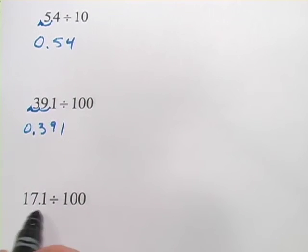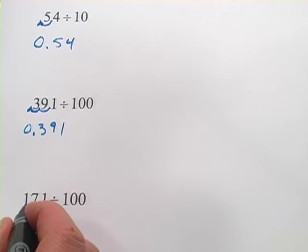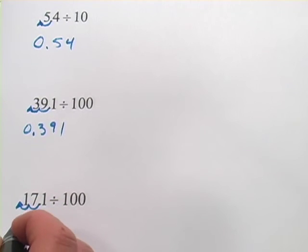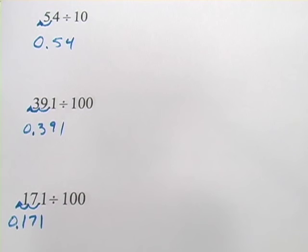And let's try this next one. 17.1 divided by 100, we're going to move it two places to the left, and there it is, 0.171. And that's how to mentally divide decimals by 10 and 100.